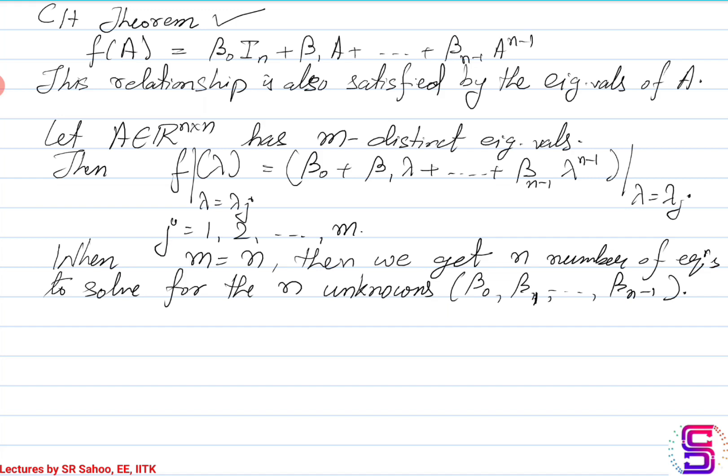For example, if you have three distinct eigenvalues of a matrix, you will get three equations. Form those three equations and solve them — you will get the values of beta_0, beta_1, and beta_2 in this case, if the example is for an order-three matrix. So once you solve, you get the values of these coefficients.